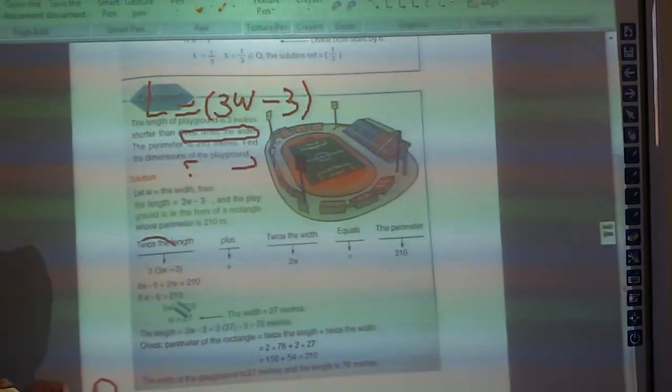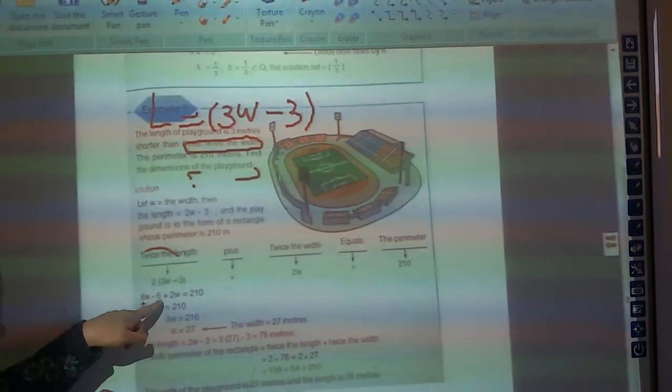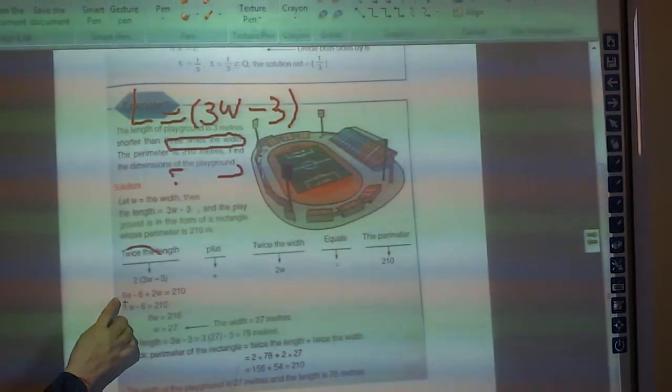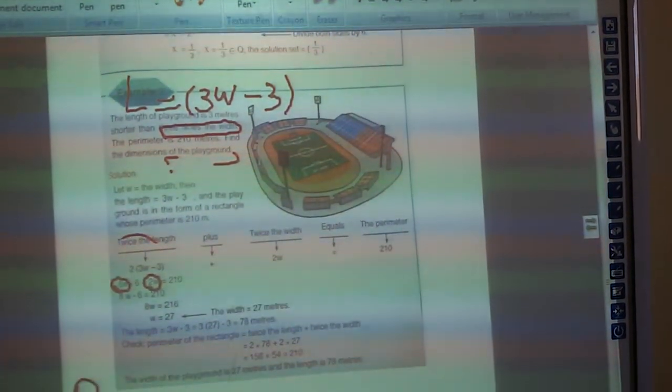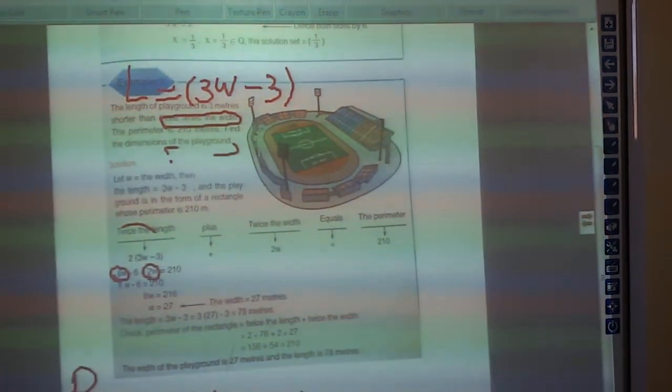So it will be 6W minus 6 and plus 2W. Let's take the W. 6W and 2W. 6W and 2W are 8W. Minus 6 equals 210.